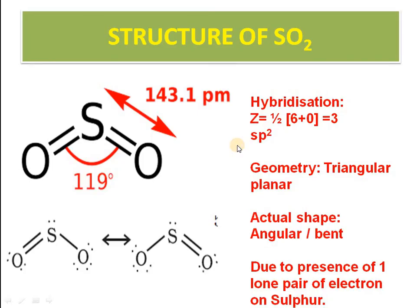The structure of sulfur dioxide is bent or angular. The hybridization is SP2, calculated using the formula: valence electrons of sulfur = 6, divided by 2 gives 3, so hybridization is SP2. The geometry is trigonal planar with an ideal bond angle of 120°, but it is reduced to 119° due to the presence of a lone pair. Sulfur dioxide is a resonance hybrid of two structures, as the S-O bond lengths are equal.